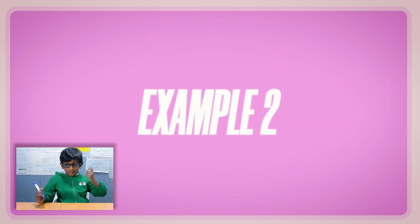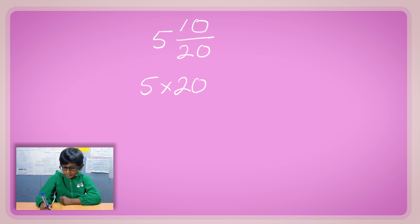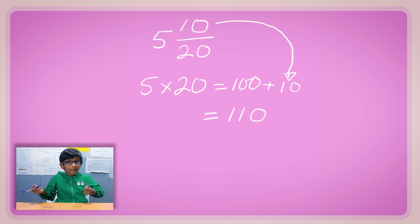Example 2. We are going to do 5 with 10 over, let's say 20. So 5 times 20 and then plus 10 as we do multiplication, which will make it 100, and I get the plus 10 left over. 100 plus 10 equals 110. So 110 and the denominator is still the same.